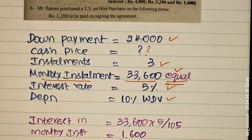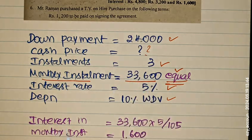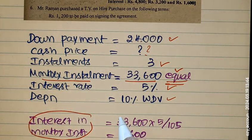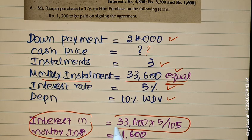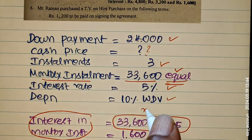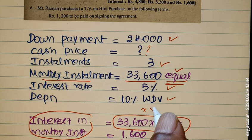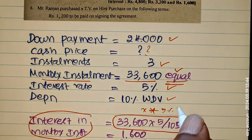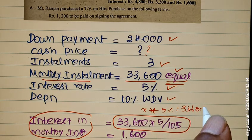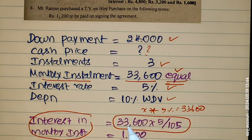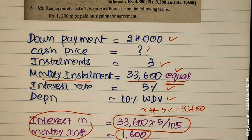Now we have to find out the Cash Price first. What is the Interest contributing in the monthly installments? So 33,600 into 5 by 105 — because the amount includes interest. If X is the amount, then X plus 5% of X equals 33,600. So the interest component is 1,600.